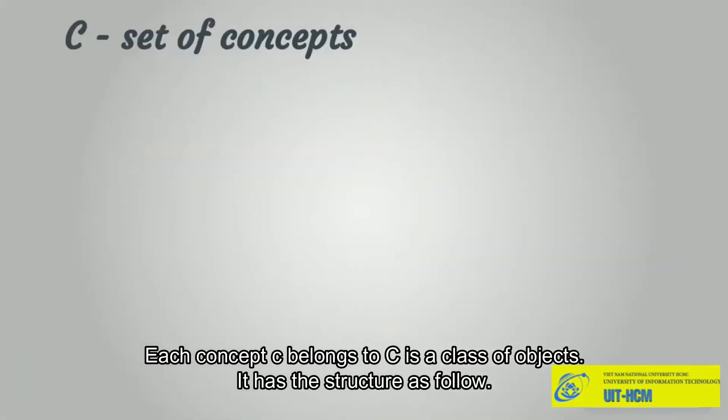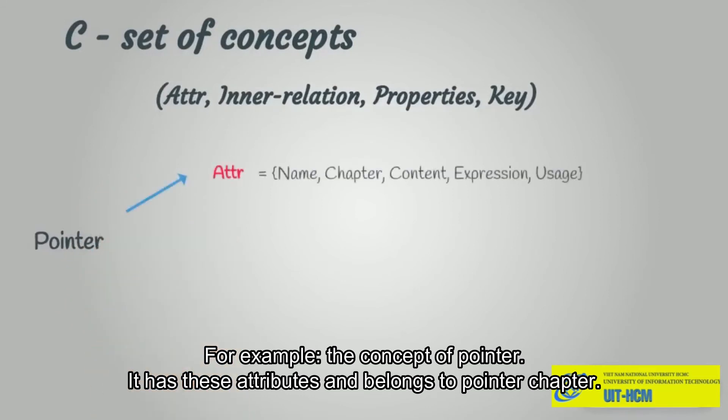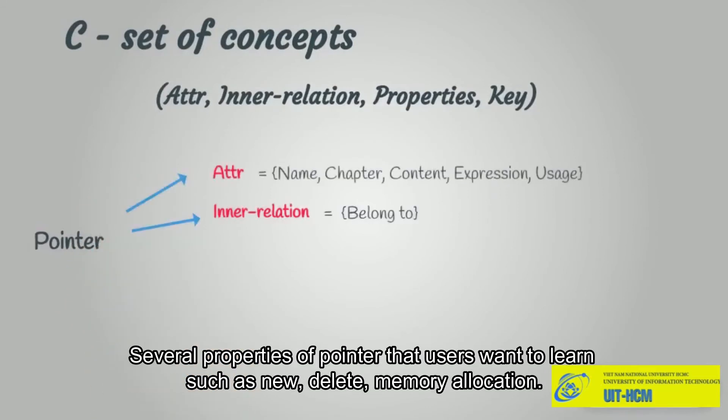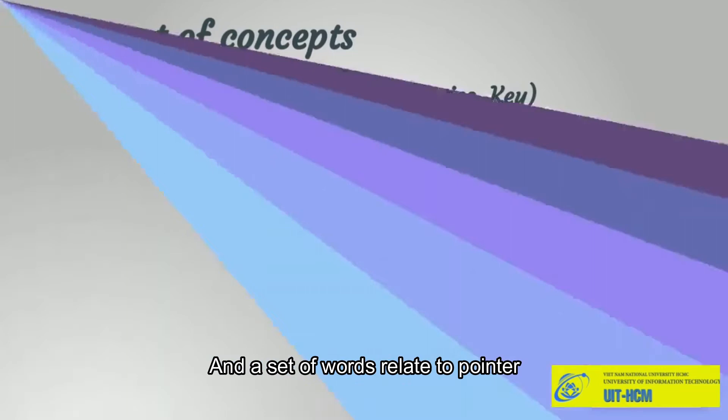Each concept C belongs to C as a class of objects with a defined structure. For example, the concept of pointer has attributes and belongs to the pointer chapter. Several properties of pointer that users want to learn include new, delete, memory allocation, and a set of words related to pointer.